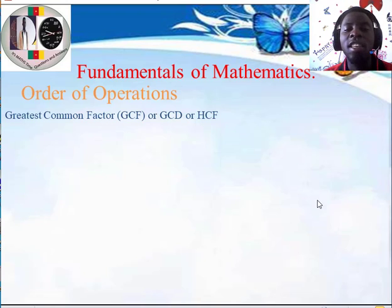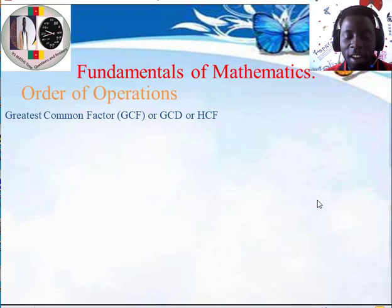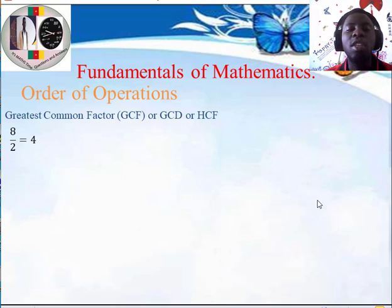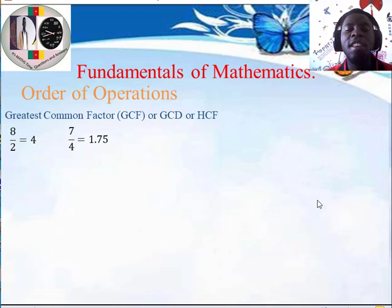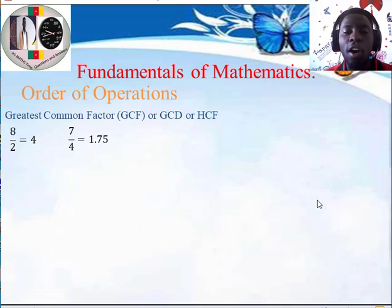So what do we mean by greatest common factor? We are going to define the terms so that we better understand them. First, what do we mean by a factor of a number? A factor of a number is simply another number that divides that number without a remainder, or with a remainder of 0. For instance, 2 is a factor of 8 because 8 divided by 2 is 4, remainder 0. But 7 divided by 4 is 1.75 — since there is a decimal, there is a remainder, and therefore 4 is not a factor of 7.